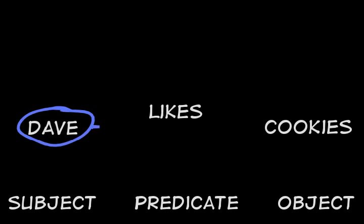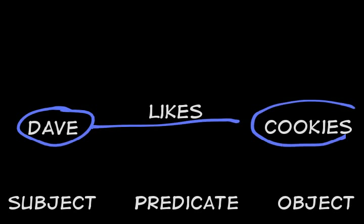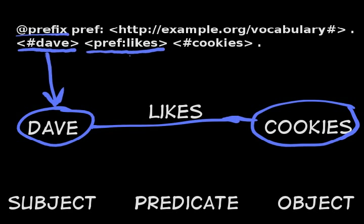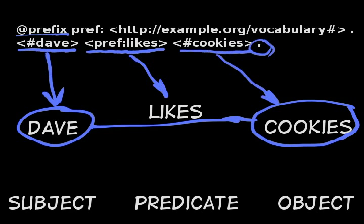If we take our previous example, Dave likes cookies, we can express it in N3 notation like so. The prefix line lets us know what the shorthand is for all of the CURIEs in the document — in other words, it defines what the namespaces are. Moving to the next line, we find the actual triple. The first item is the subject, enclosed in angle brackets to specify that it is a URI. The second item is the predicate, also a URI. The third item is the object, also a URI. Finally, there is a period at the end of the triple to end the statement.